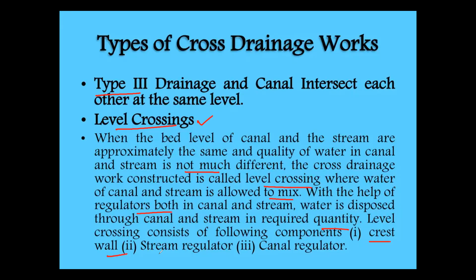The level crossing consists of the following components: the crest wall, stream regulator, and canal regulator. When the canal and stream are crossing at the same level and the quality of water in both is approximately the same, we construct a level crossing. We need to control the water flow in the canal as well as the stream by constructing regulators — a canal head regulator and a stream head regulator — and a crest wall for the canal.